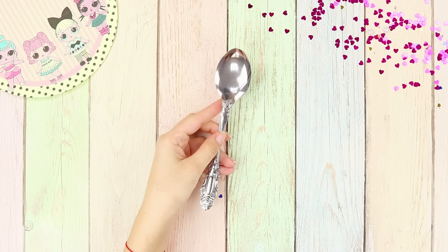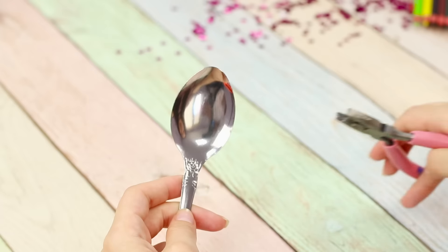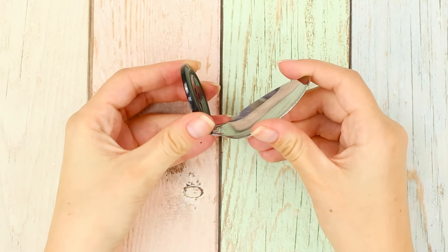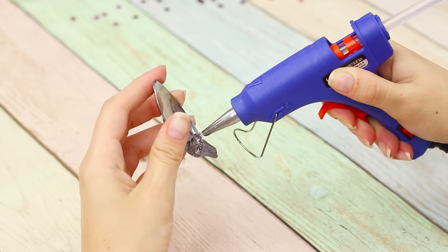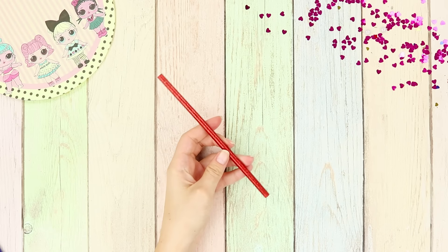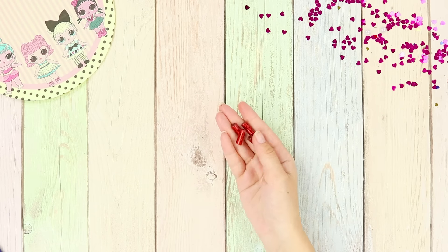For this idea, you will need a tablespoon and a big flat button. Carefully remove the bowl from the spoon using pliers and fasten the button to it at an angle like this. Next, take a sparkly refill for a hot glue gun and cut it into four parts.